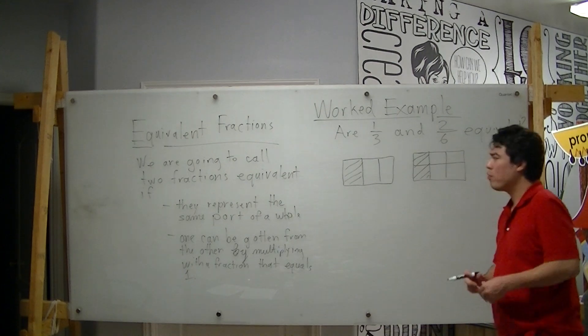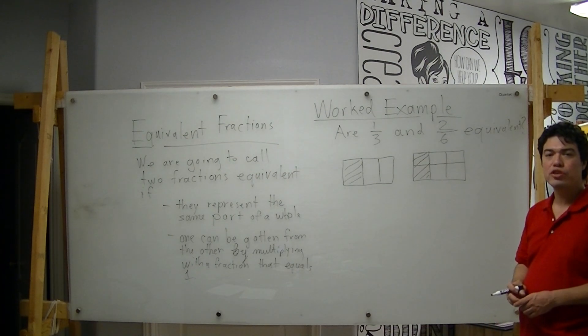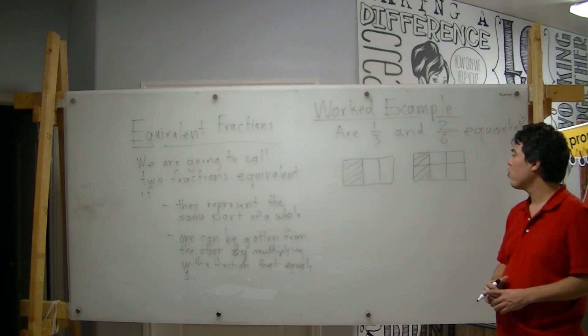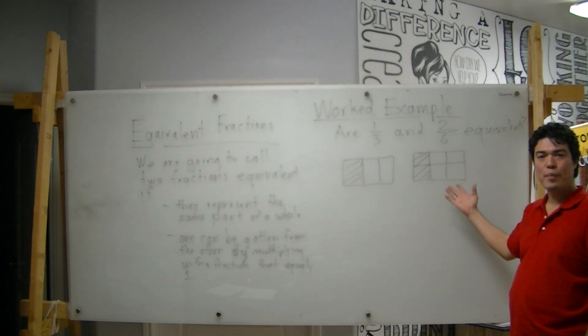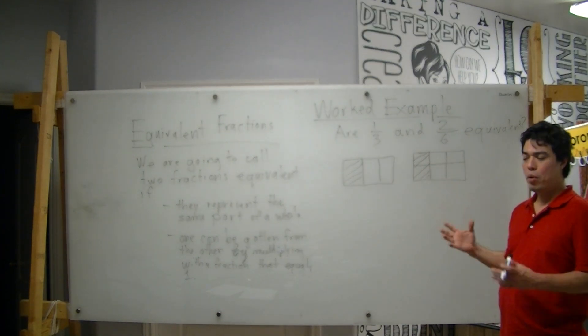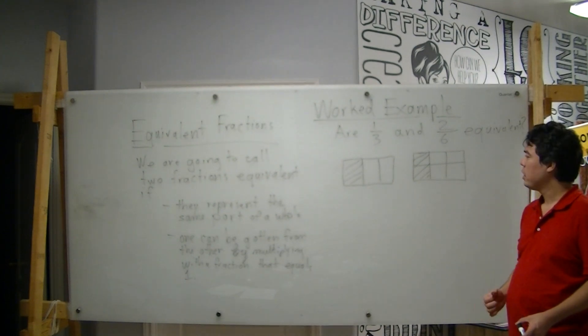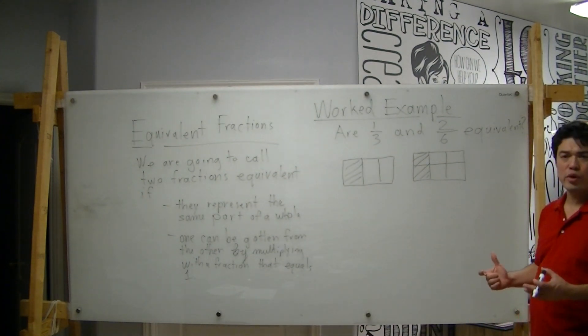Now, provided that we assume that these rectangles are identical and that the cuts have been made appropriately, it's clear to see that one-third and two-sixths represent the same portion of a whole. And so, indeed, these are equivalent fractions.